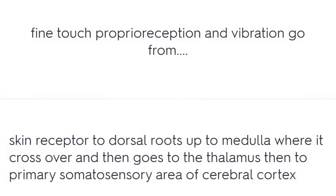Fine touch, proprioception, and vibration go from the skin receptor to the dorsal roots, up to the medulla where they cross over, then go to the thalamus, then to the primary somatosensory area of the cerebral cortex.